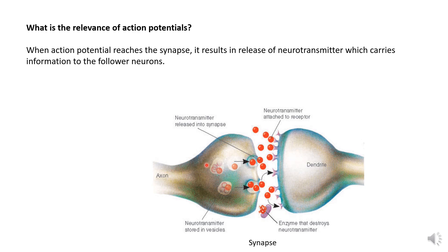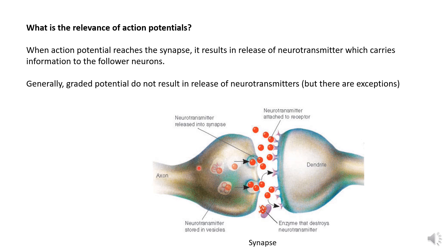If you have a graded potential — a small depolarization in a neuron which is not crossing the threshold for generating an action potential — then that small depolarization will typically not result in the release of neurotransmitters. But there are some exceptions. There are some neurons that do not have action potentials at all, perhaps because they do not have voltage-gated sodium channels. In those neurons, there are mechanisms that allow the release of neurotransmitters even in the absence of action potentials. But by and large, especially in vertebrates, most neurons do have action potentials, and in those neurons action potentials are essential for the release of neurotransmitters.